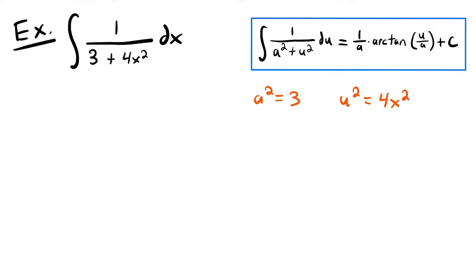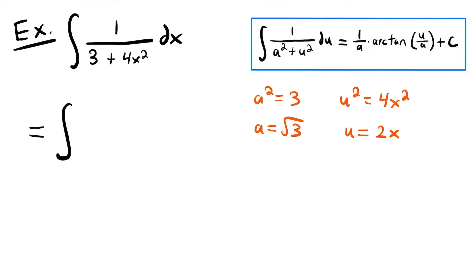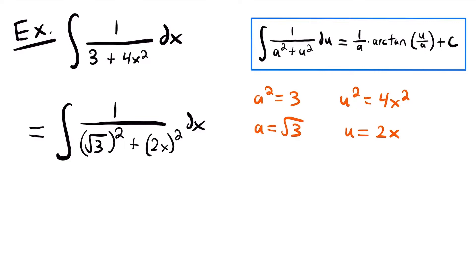Taking the square root of both sides of each equation, we get a equals the square root of 3, and u equals the square root of 4 times x, which is 2x. Using those values, we can rewrite the integral as the integral of 1 divided by the square root of 3 squared plus 2x squared dx, which now looks a lot like the arctangent integration rule.